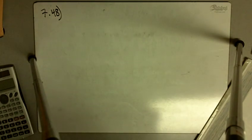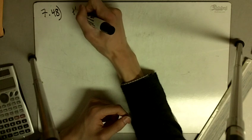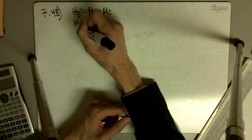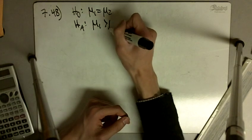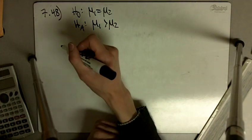Okay, problem 748 says for each of the following situations, suppose our null hypothesis is that mu1 equals mu2, and that the alternative is that mu1 is greater than mu2. Then it asks, would H0 be rejected?